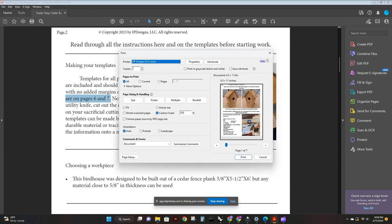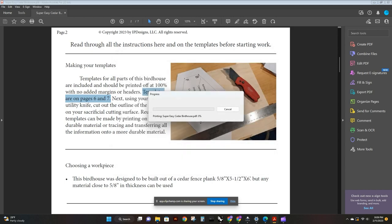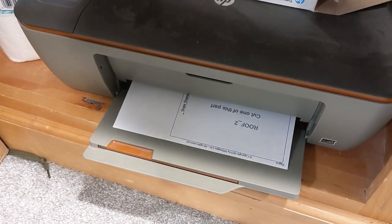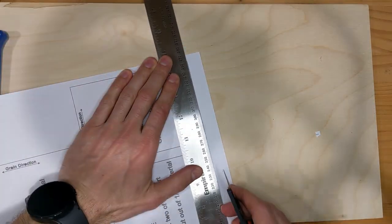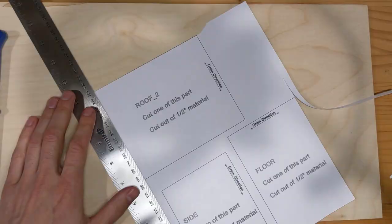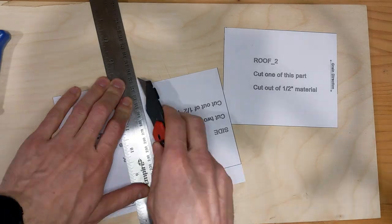Once you're ready to move on, print out the templates which are located on pages six and seven. Use a flexible steel ruler and a utility knife to cut out the profile of the templates.